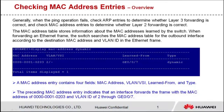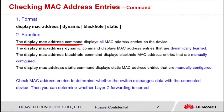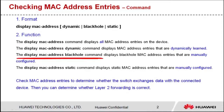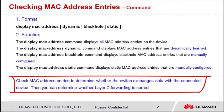How do I query MAC address entries? Let's see the command format. If no parameter is specified, the command displays all MAC address entries of the device. When dynamic is specified, the command displays MAC address entries that are dynamically learned. When black hole is specified, the command displays black hole MAC address entries that are manually configured. Check MAC address entries to determine whether the switch exchanges data with the connected device, and then determine whether layer 2 forwarding is correct.